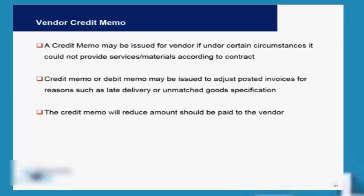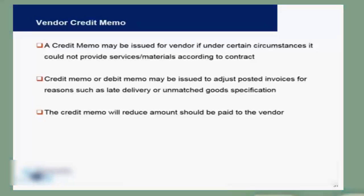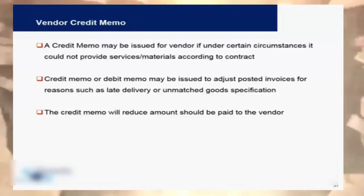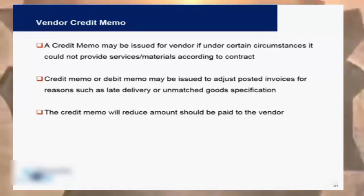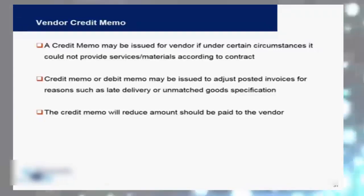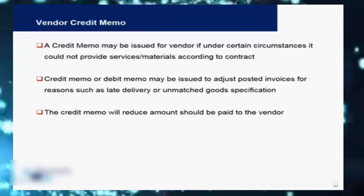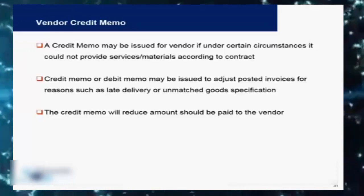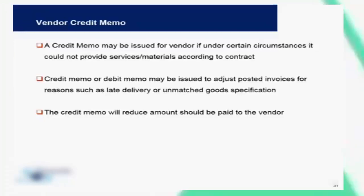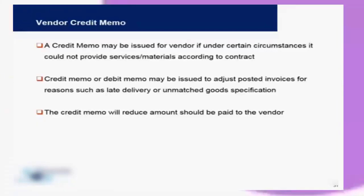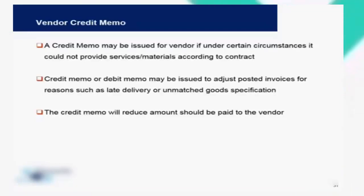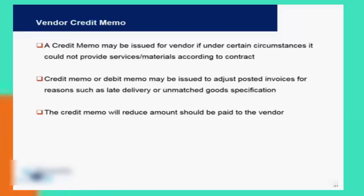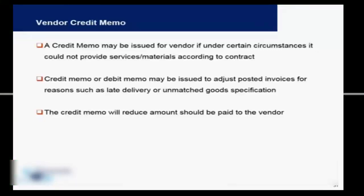For example, suppose you purchase goods from a vendor worth $100 and have received and posted an invoice for $100. If you then realize that goods worth $25 are not in good condition or are broken and you want to return them, you need to create a credit memo in the system. This credit memo acts as a reversal of $25, so you only need to pay the vendor $75. A credit memo is exactly like an invoice but reversed.